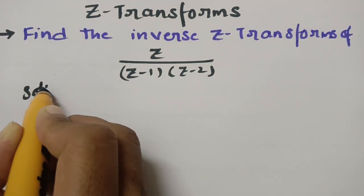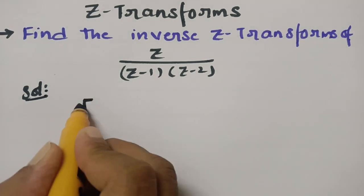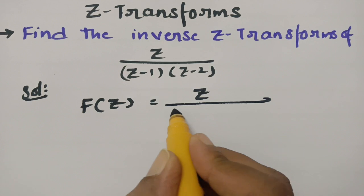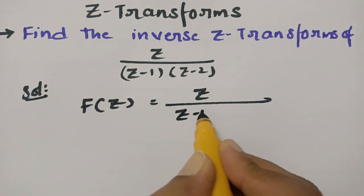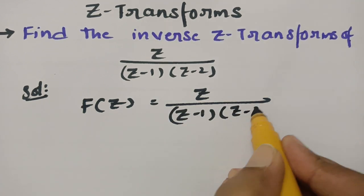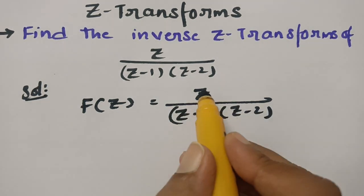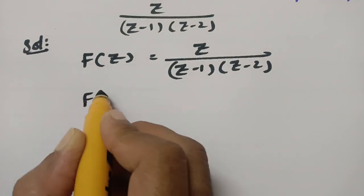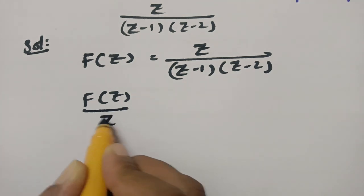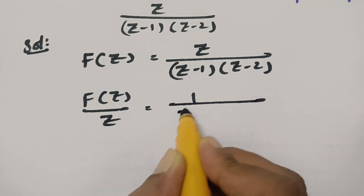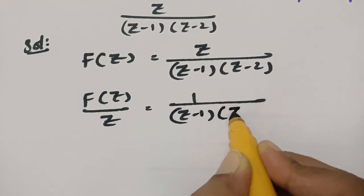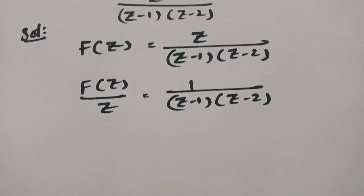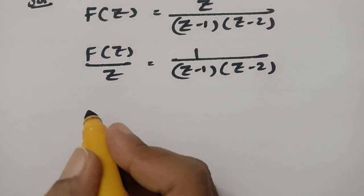Here is the solution. First of all, I am considering this as capital F of Z equal to Z by Z minus 1 into Z minus 2. Now I am bringing this Z to the other side, so this will become F of Z by Z equal to 1 by Z minus 1 into Z minus 2, and now we have to resolve into partial fractions.